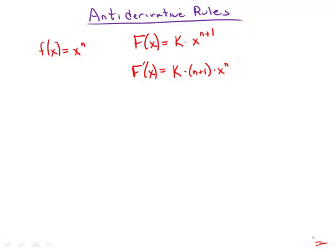And so if we want this to equal x to the n, we need this whole factor out in front to equal 1. We need k times n plus 1 to equal 1. Or in other words, k equals 1 over n plus 1.